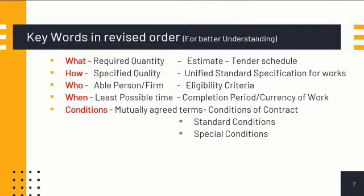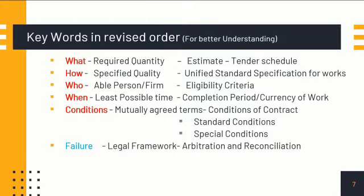Then we have 'mutually agreed terms,' which are the conditions of contract. In railways, we have standard conditions of contract and special conditions of contract. These consist of all the clauses with emphasis on the rights and responsibilities of railways and also of the contractor in completing the contract work. The 'legal framework' is referred to as arbitration and reconciliation — the negative aspect of contract work covering what has to be done if the contractor fails, or if the railways fails.